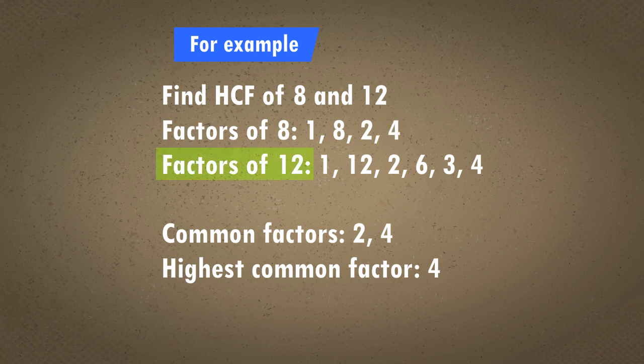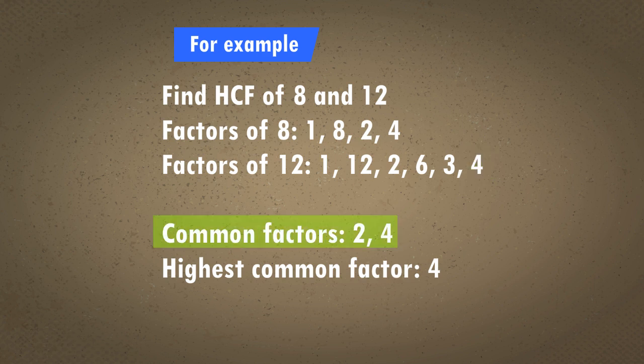Factors of 12 are 1, 12, 2, 6, 3, and 4. We can see that 2 and 4 are the common factors. Therefore, the highest common factor is 4.